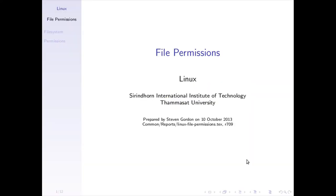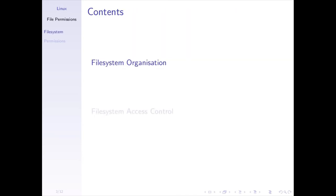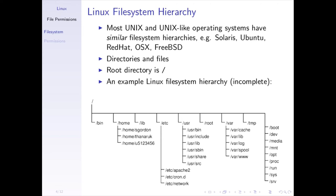The file system hierarchy usually has these common subdirectories: bin, home, lib, and so on. bin is short for binary — it stores binary applications. If you look in the bin directory you'll find many applications. home is where your home directory is. There can be many users on a single computer; the typical place for their home directories is home slash username.